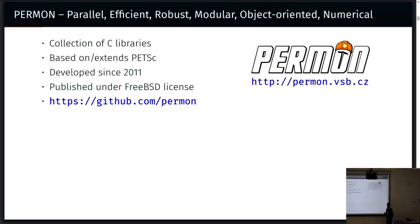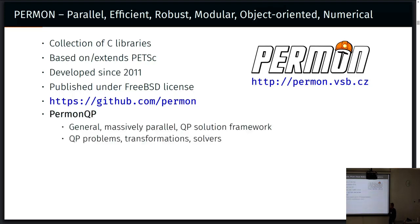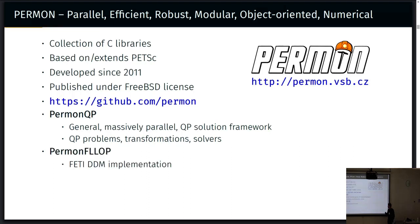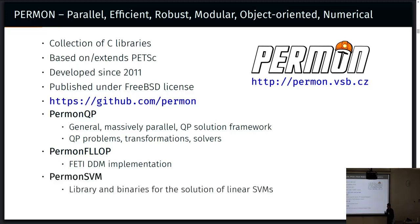PERMON is a collection of C libraries that is based on PETSc. The main module of PERMON is PERMON QP, which is used for solution of quadratic problems. Based on this module, we have others: PERMON Flop, which implements FETI-type domain decomposition methods, and PERMON SVM for support vector machines. These are all published under open source license and available on GitHub.